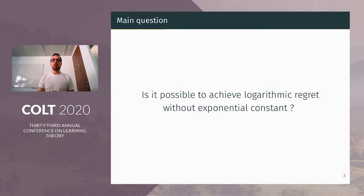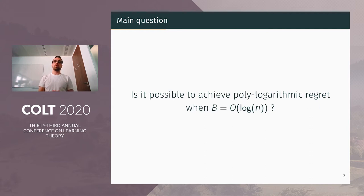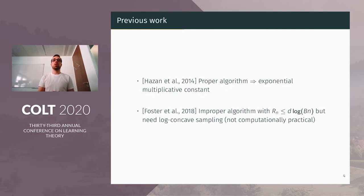So one can ask if it's possible to have the best of the two algorithms, to achieve logarithmic regret without exponential constant. If I'm reframing this goal, then I ask: is it possible to achieve polylogarithmic regret in the regime when B equals O(log n)? Indeed, the online gradient descent doesn't have polylogarithmic regret, and in the regime when B equals log n, the online Newton step algorithm doesn't have also polylogarithmic regret.